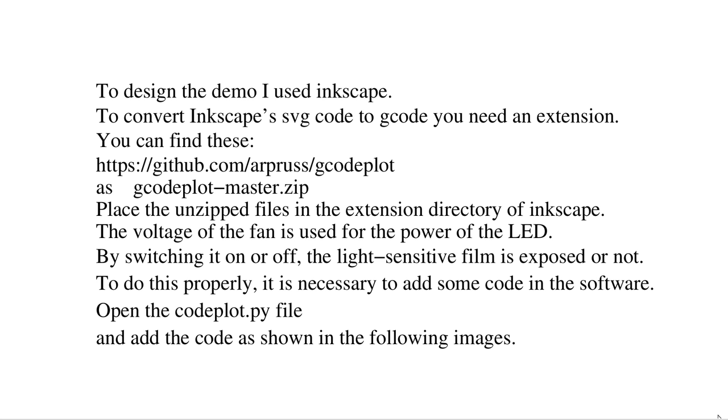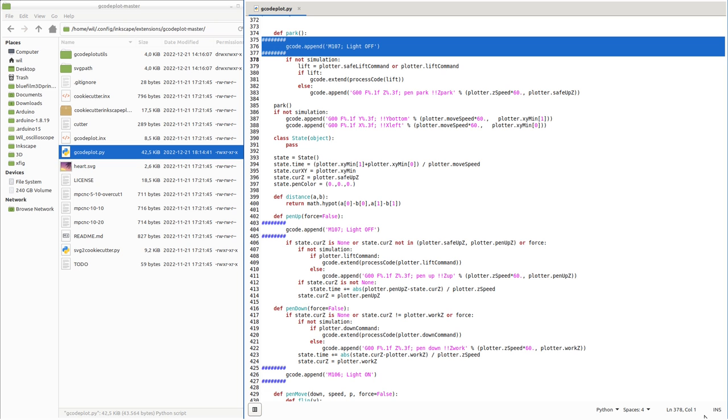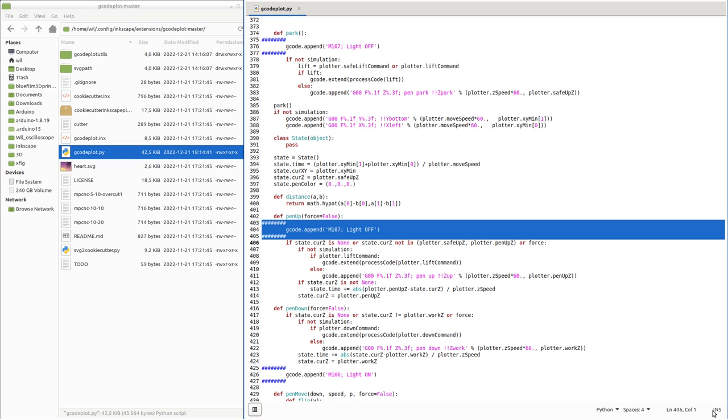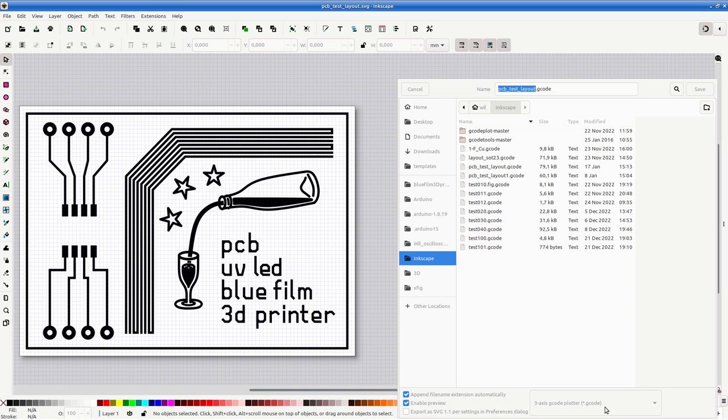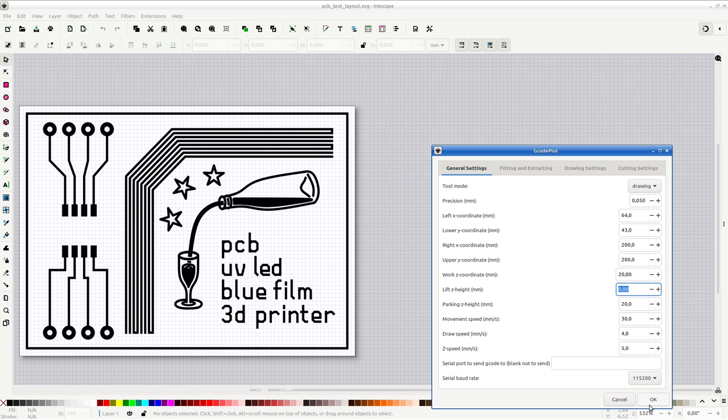I used Inkscape to create an example layout. Extended software is needed to generate G-code for the plotter. Some extra lines of code are added to the extended software. Open Inkscape and design a layout. Save the data as 3-axis G-code plotter. The window G-code plot appears. Take the tab General Settings, enter the correct coordinates, and special lift set height 0 mm. Otherwise, the z-direction moves with each light change of the LED. Enter tab Drawing Settings for the areas to be filled in. Click OK to generate the G-code.